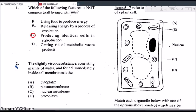Okay, question 2. The slightly viscous substance consisting mainly of water and found immediately inside cell membranes is the A, the cytoplasm, B, the plasma membrane, C, the nuclear membrane, or D, the protoplasm. So the correct answer for that would be the cytoplasm and not the protoplasm. The protoplasm is actually the cytoplasm and the organelles that are found inside the cytoplasm together. So it could only be the cytoplasm. For sure it is not the plasma membrane, also known as the cell membrane, and is definitely not the nuclear membrane.